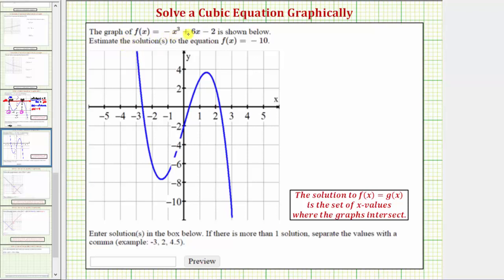The graph of f(x) equals negative x cubed plus 6x minus 2 is shown below here in blue. We're asked to estimate the solution or solutions to the equation f(x) equals negative 10.